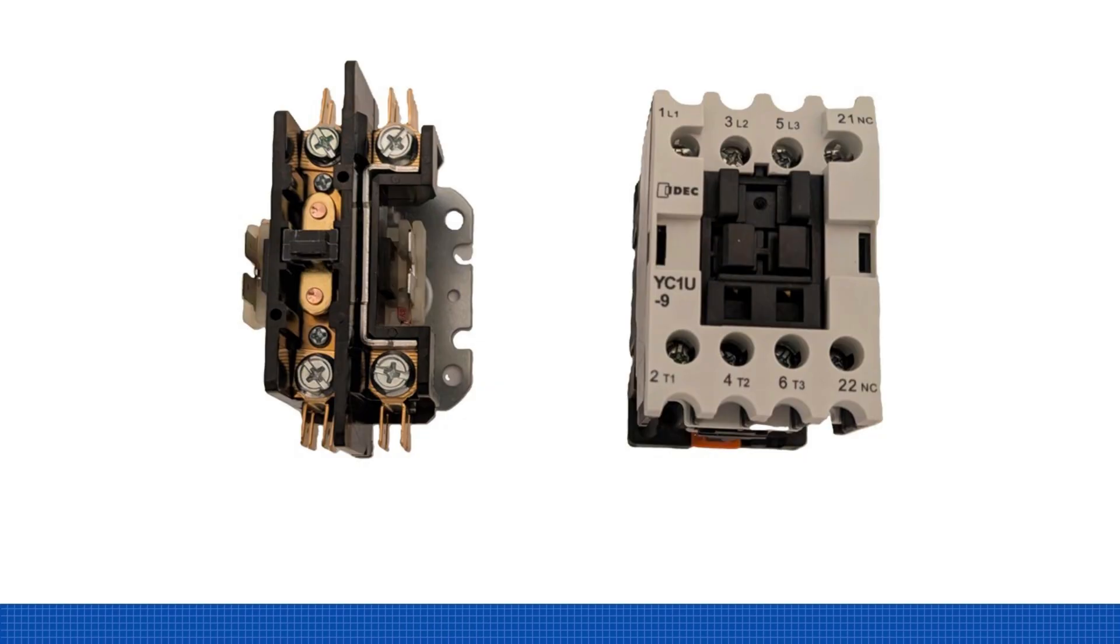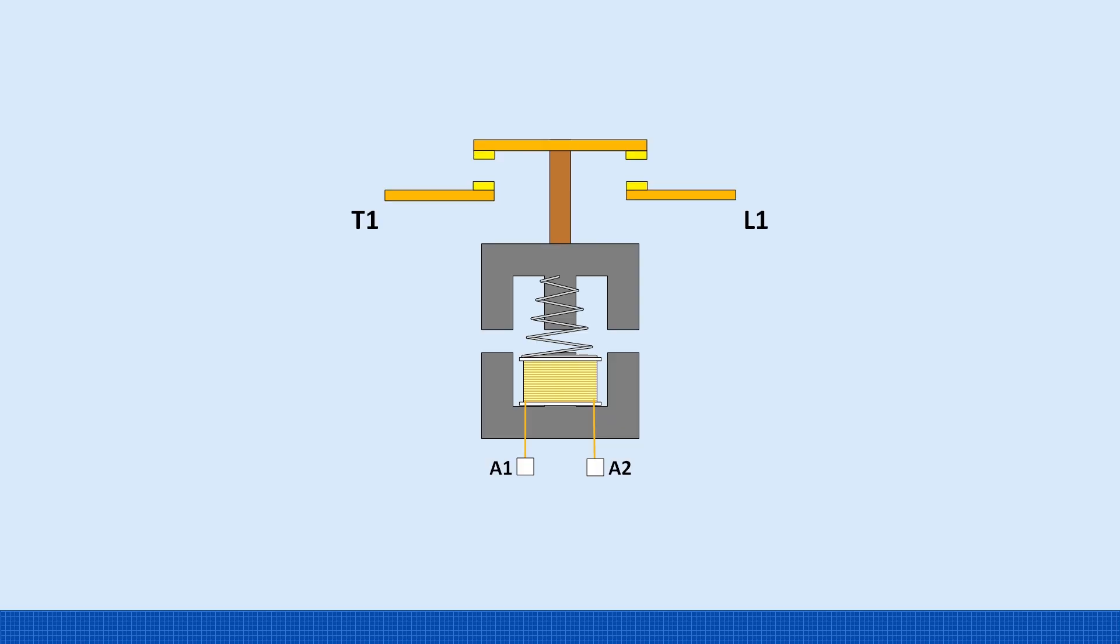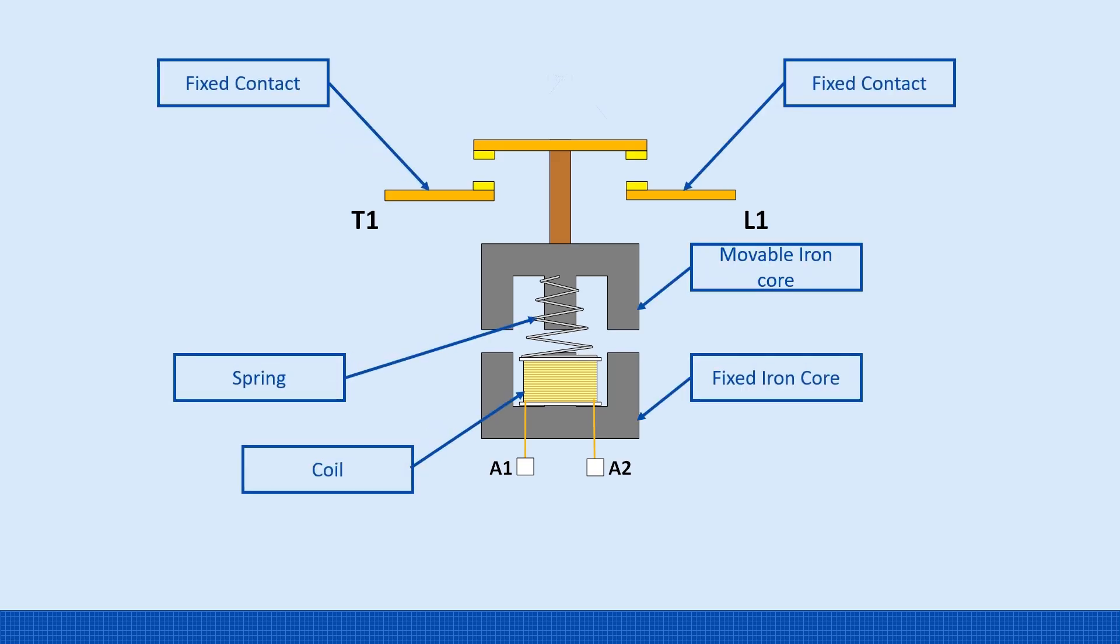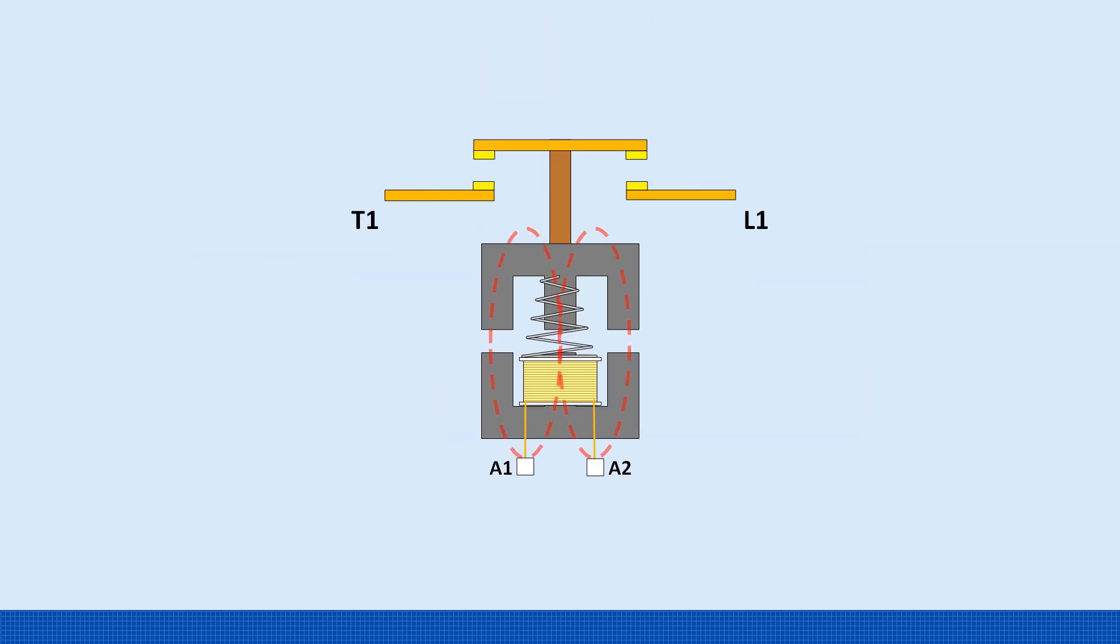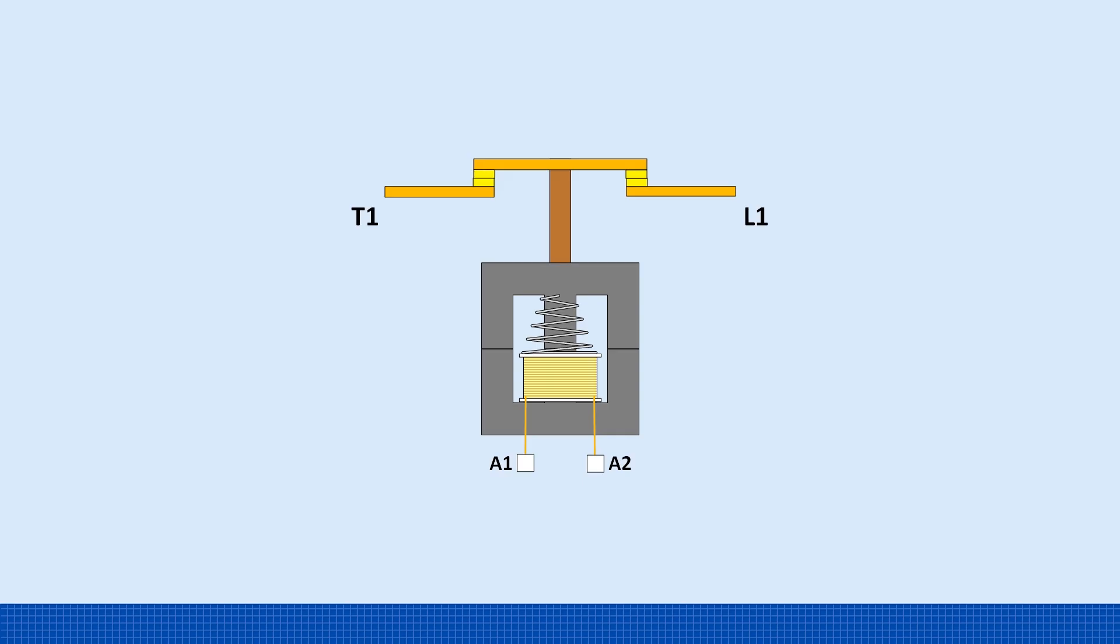So how does a contactor work? A contactor is made up of a few key parts: a fixed iron core, a coil, a movable iron core, a return spring, fixed contacts, and movable contacts. The movable contacts are connected to the movable iron core using a non-metallic arm, so there's electrical isolation between the coil and the power contacts. When power is applied to the coil, it generates a magnetic field. This field magnetizes the fixed iron core, which pulls the movable iron core downward. As the movable core moves, it pulls the arm with it, closing the contacts.